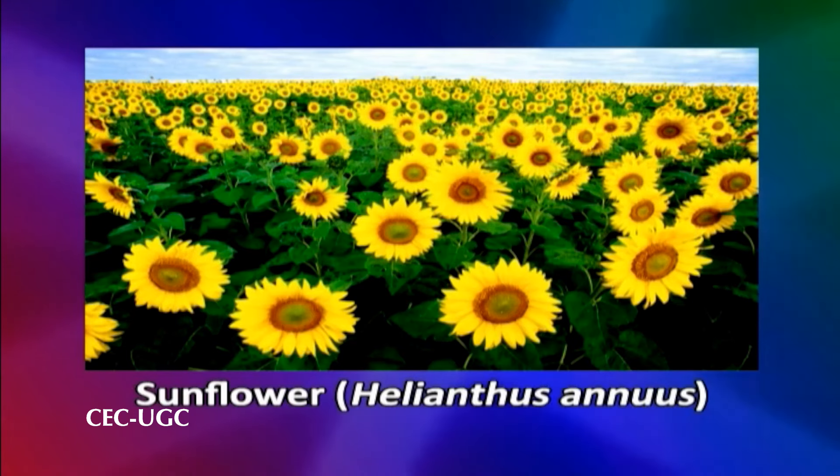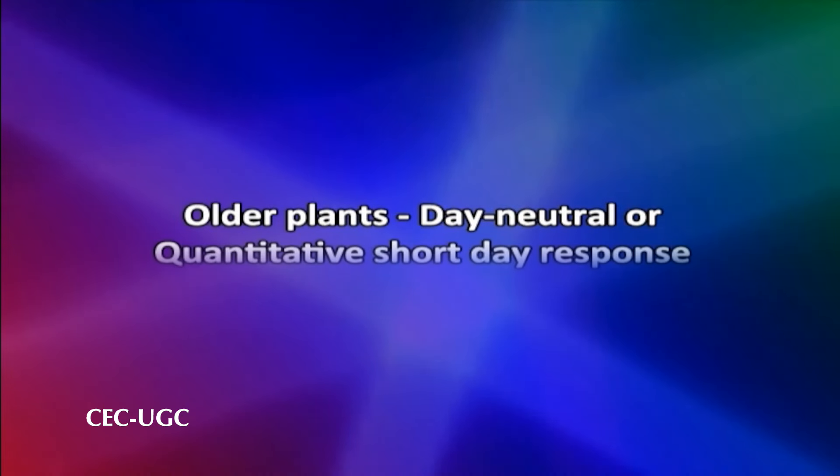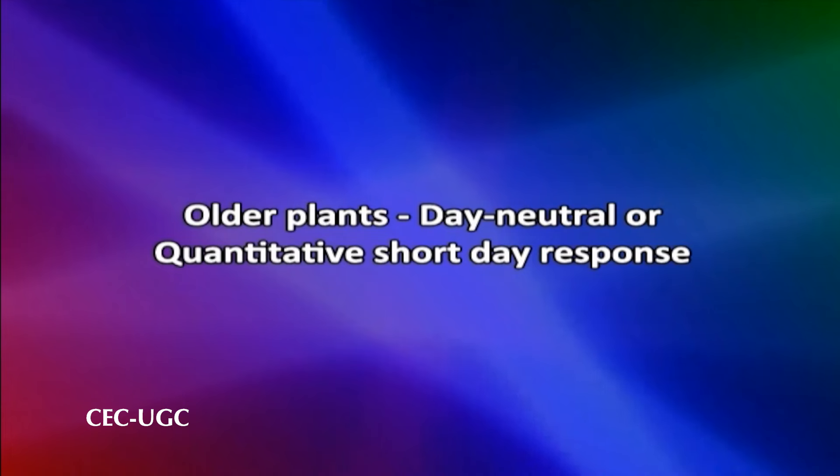There are many species in which the photoperiodic response may change with age. Such changes are usually in the direction of day neutrality from an initial qualitative or quantitative long or short day response. A particularly clear example is shown by a variety of sunflower, Helianthus annuus, in which young plants had a qualitative short day response with a critical day length between 12 and 16 hours, but older plants were either day neutral or showed a weak quantitative short day response.